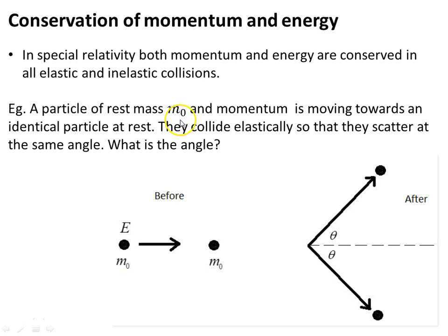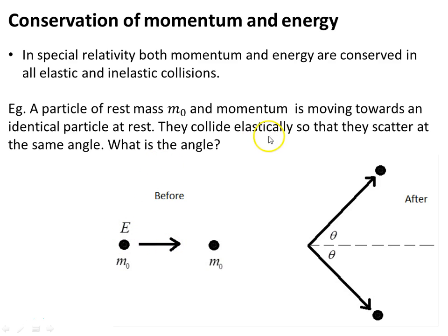A particle of rest mass m₀ with momentum is moving towards an identical particle at rest. Two identical particles: one at rest, one moving towards the other with energy E. They collide elastically so that they scatter at the same angle. What is the angle?